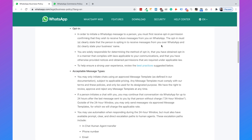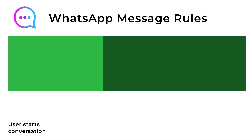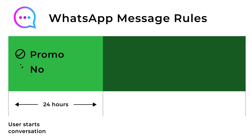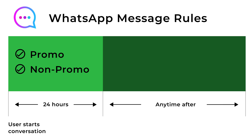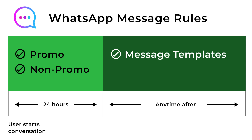The third important point in the WhatsApp Business Policy is the message rules. Every time a user sends a message to your WhatsApp chatbot, a 24-hour window will open. Within this window, you can send any message to the user with absolutely no constraints. But outside the 24-hour window, you can only send messages according to specific use cases called message templates — for example, a booking confirmation. Just know that you have 24 hours to respond to every message.